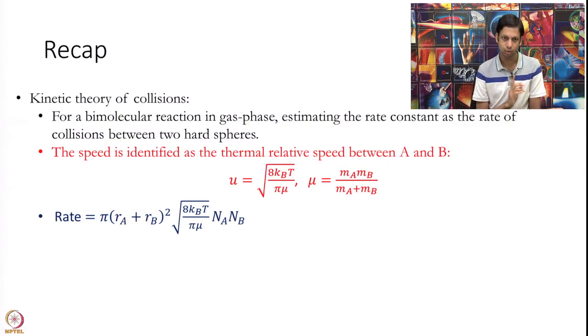Again, a quick recap. This kinetic theory of collisions is valid only for bimolecular reactions. We identified the thermal speed as U equals square root of 8kT over pi mu, where mu is the reduced mass ma times mb over ma plus mb, and we got the final rate as pi times ra plus rb squared times square root of 8kT over pi mu times na times nb.